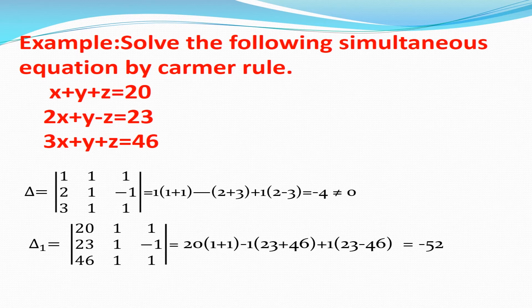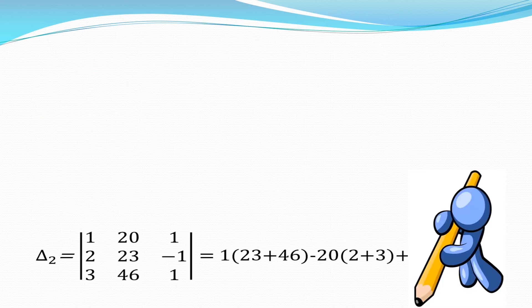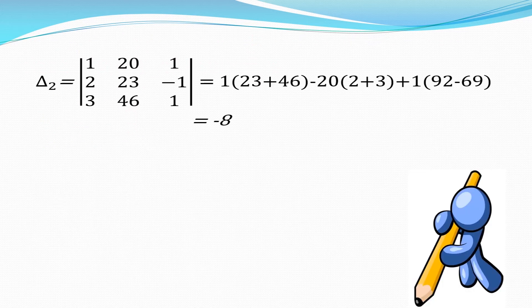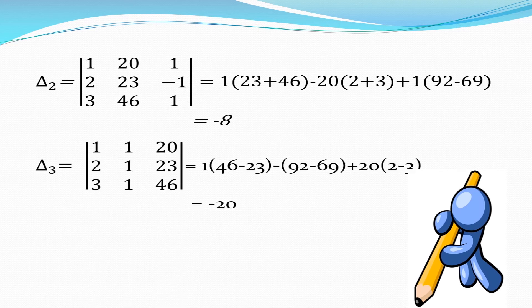And we proceed to solve delta 1, delta 2, delta 3. On solving delta 1 is minus 52, delta 2 is minus 8 and delta 3 is minus 20.